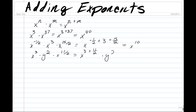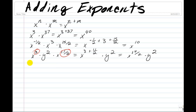y to the power of 2, which is equal to x to the power of 17 over 2 times y squared. Here, the only two terms we combined were the x to the power of 3 and x to the power of 11 over 2, because both of them had the same variable x, and we just left y squared as it is.